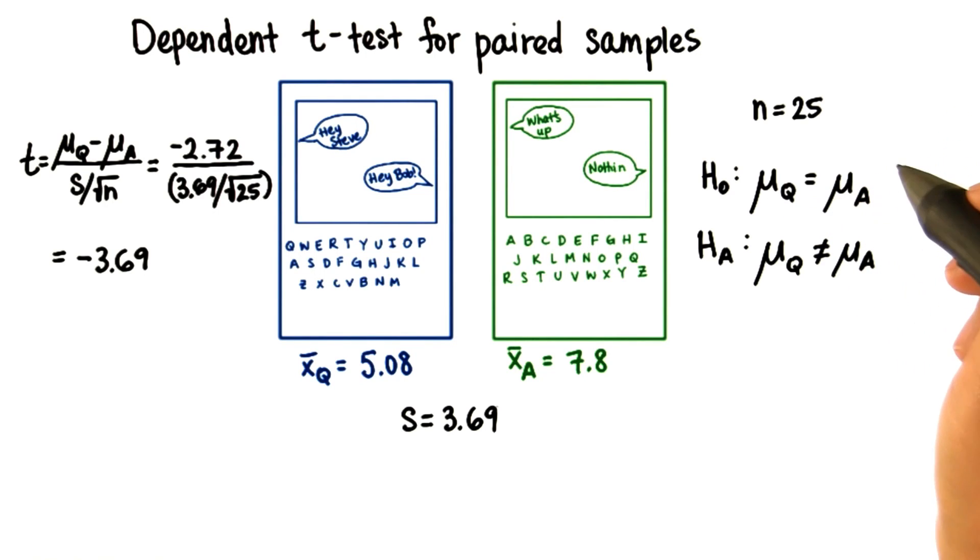I want to make one more note before finishing with this lesson. Remember how I said before that we can write this as mu sub q minus mu sub a equals 0 for the hypothesis test?